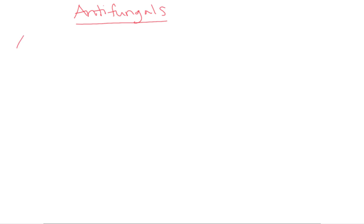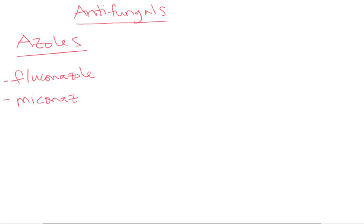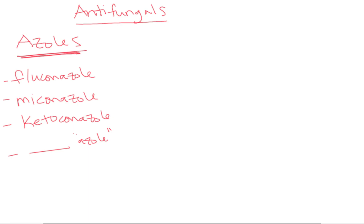The first one I'm going to talk about is the azoles. The azole group includes everything that ends in azole — so fluconazole, also called Diflucan, miconazole, ketoconazole, and there's more, but they all end in azole. The real reason for this is because there's an azole ring in chemistry and that's what these antifungals interfere with.